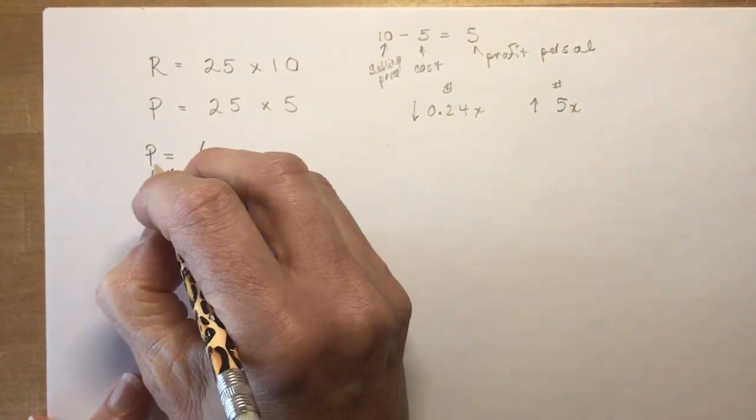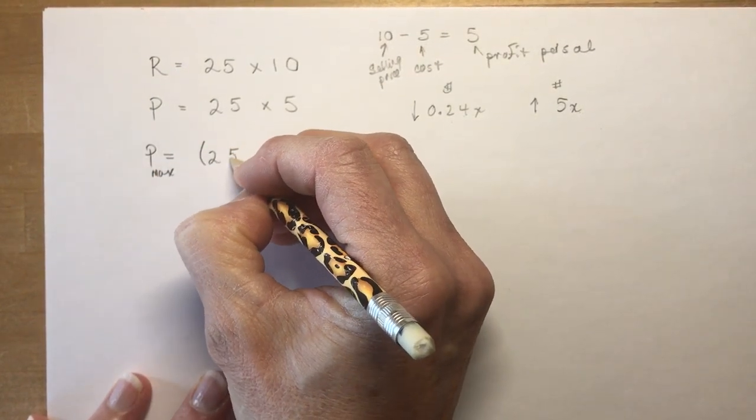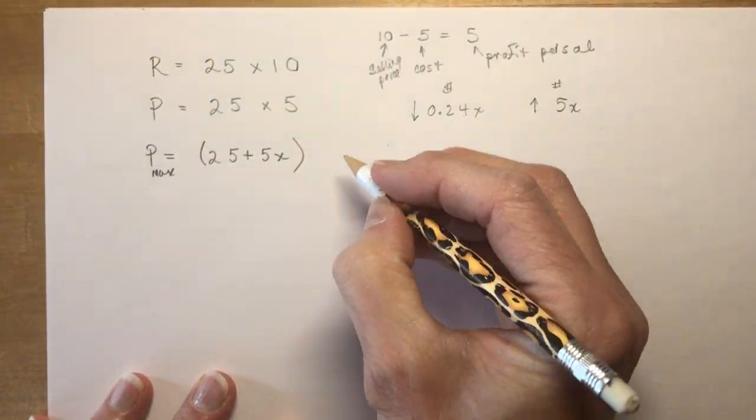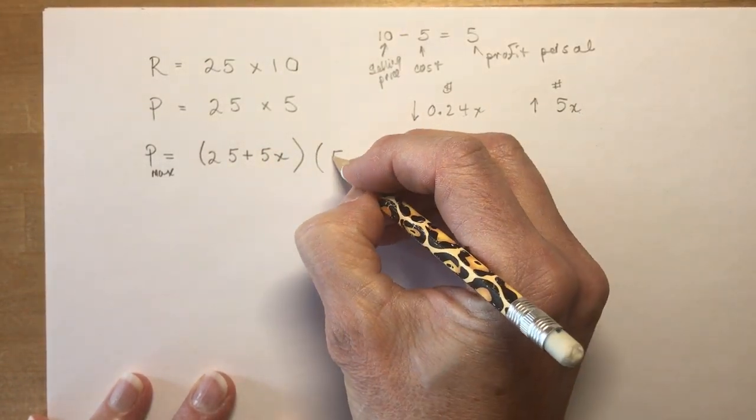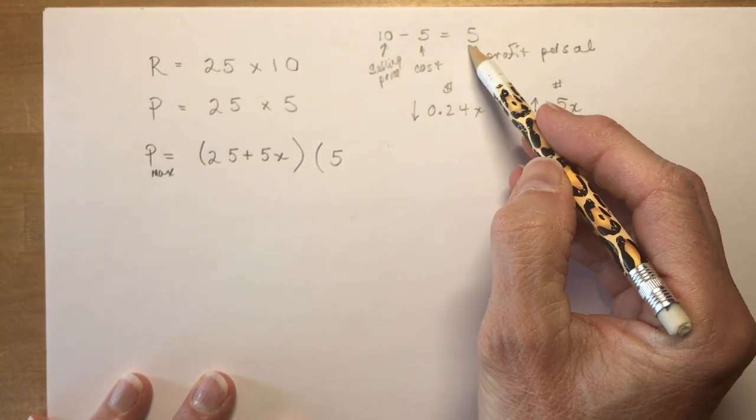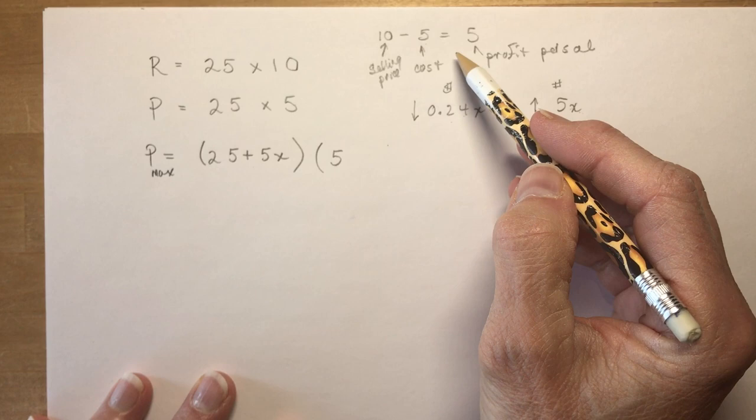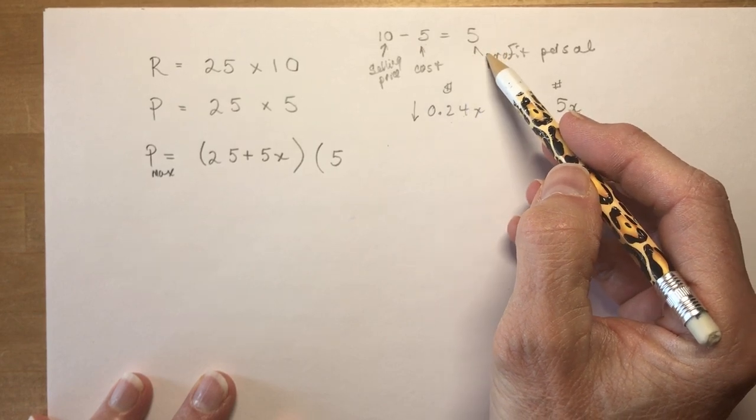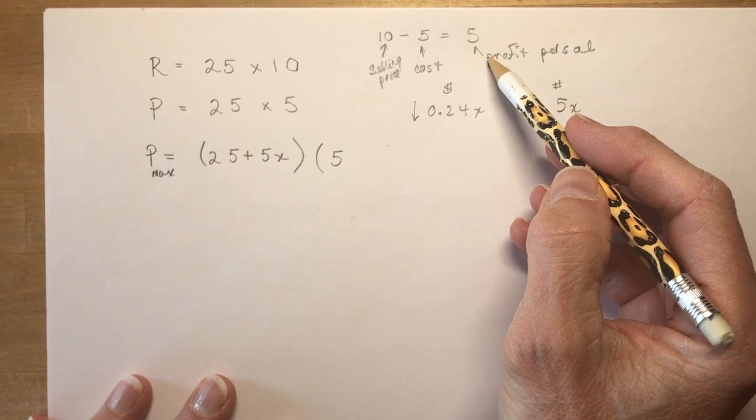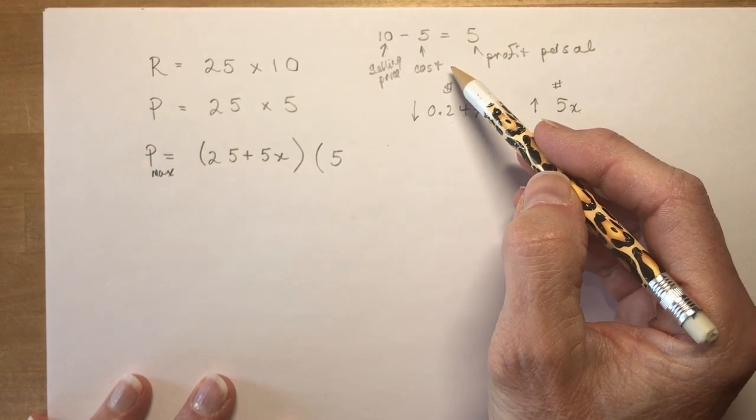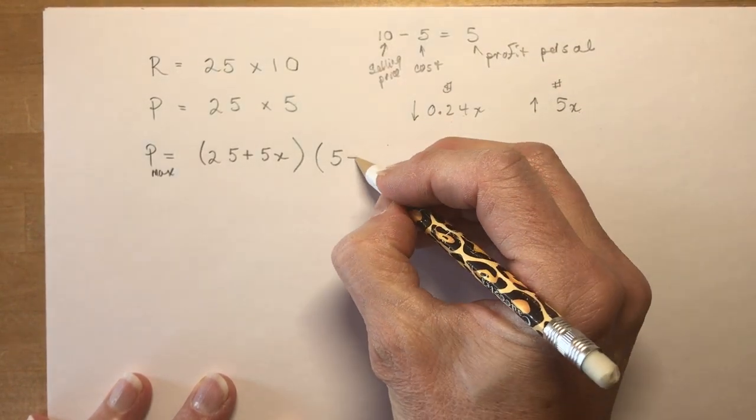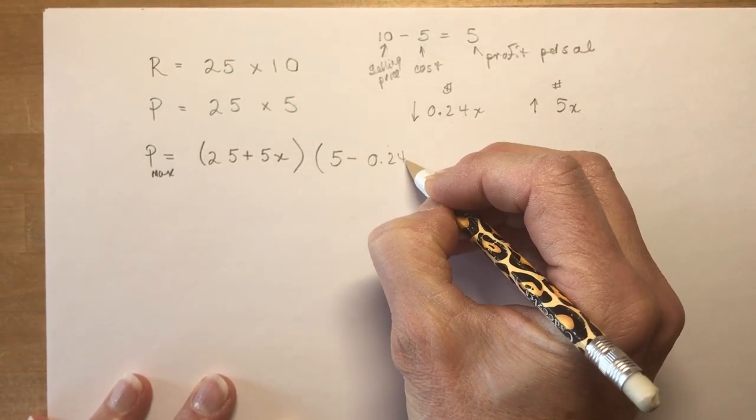So profit maximized now is going to be: I'm going to take 25 and I'm going to add 5X to it. That means I'm selling five more, and multiply by the new profit price. Because whatever you don't get in the revenue is coming directly off your profit, right? If I sell something for seven dollars and it costs me five, I make two. If I sell something for ten dollars and it sells for five, I make five. So it comes right off. So 5 - 0.24X.